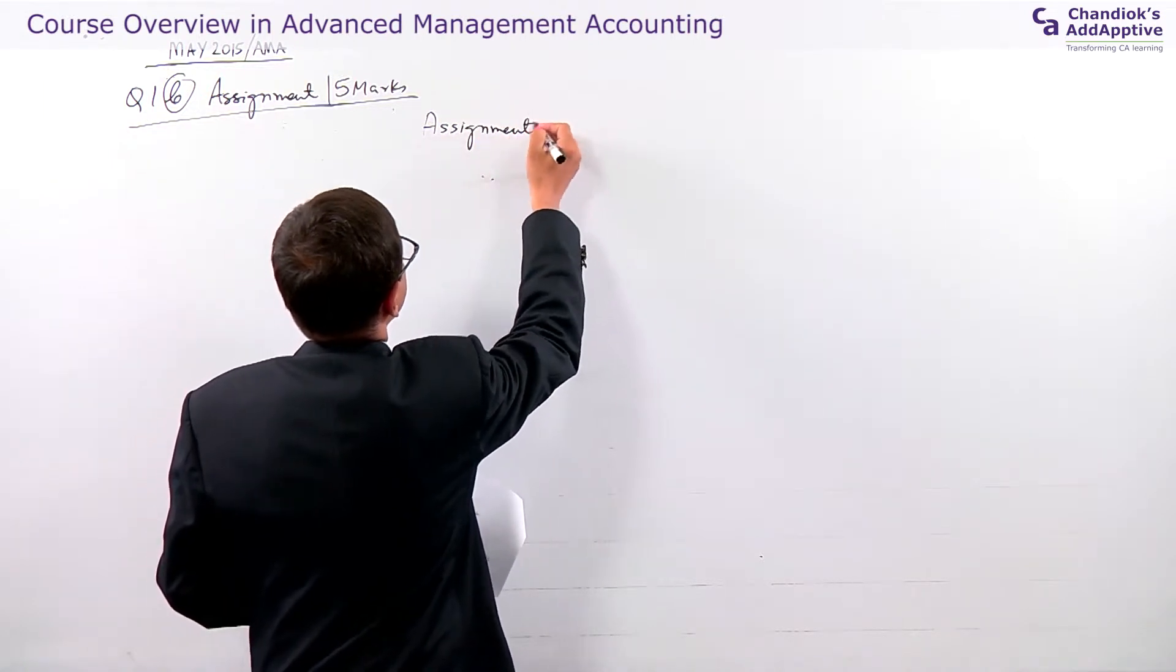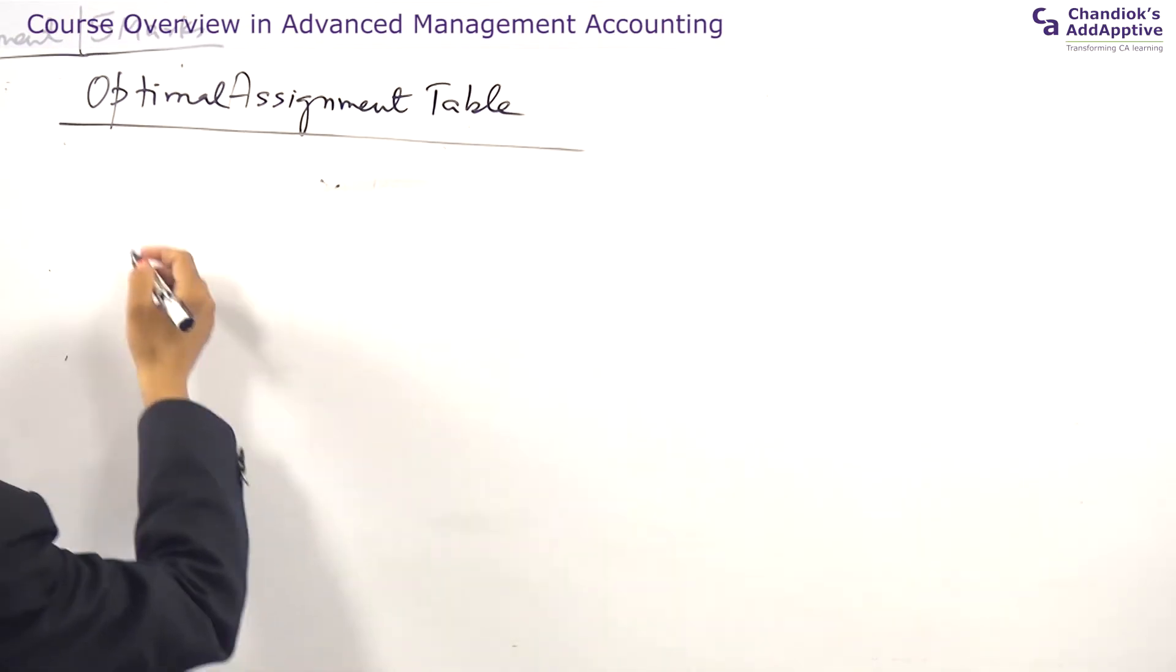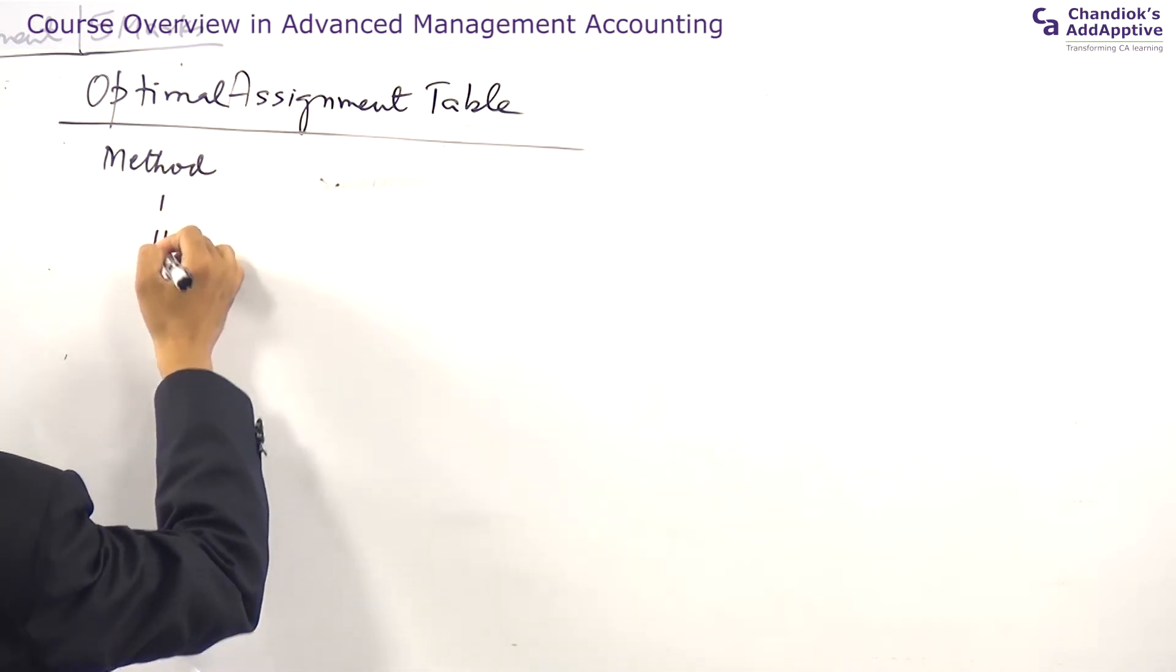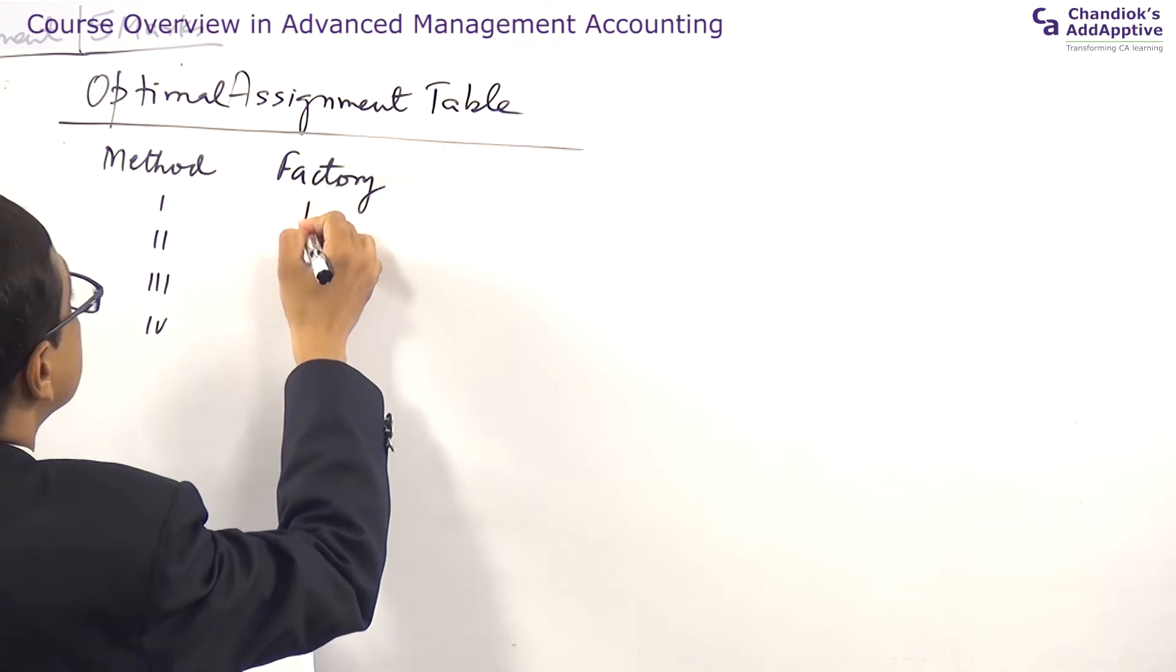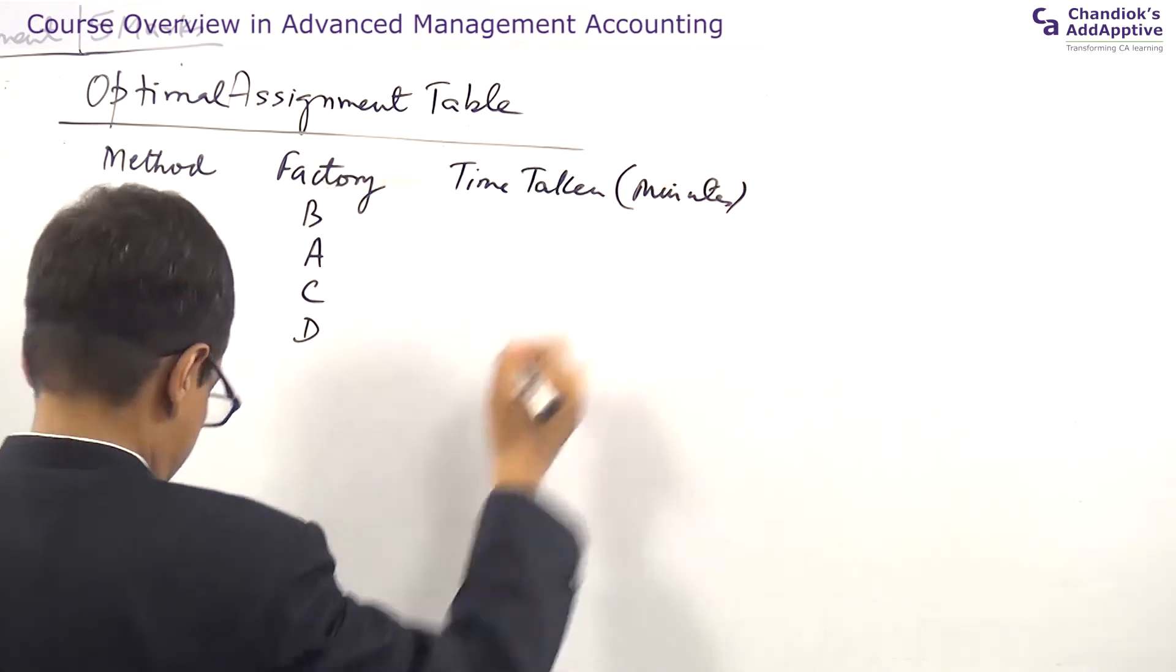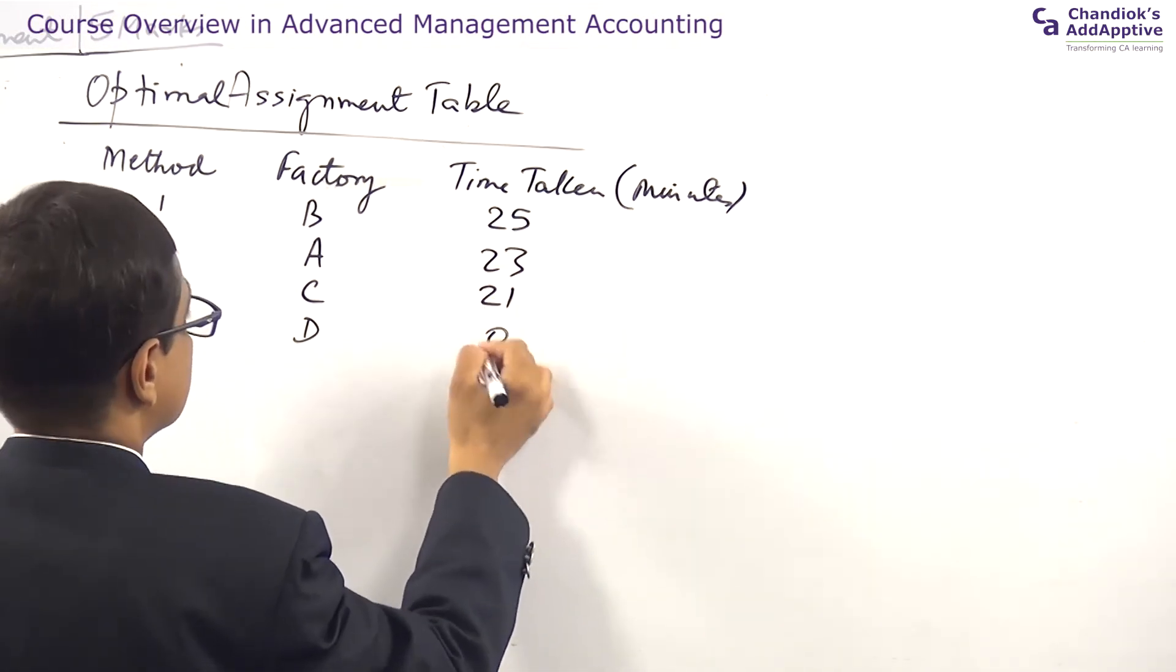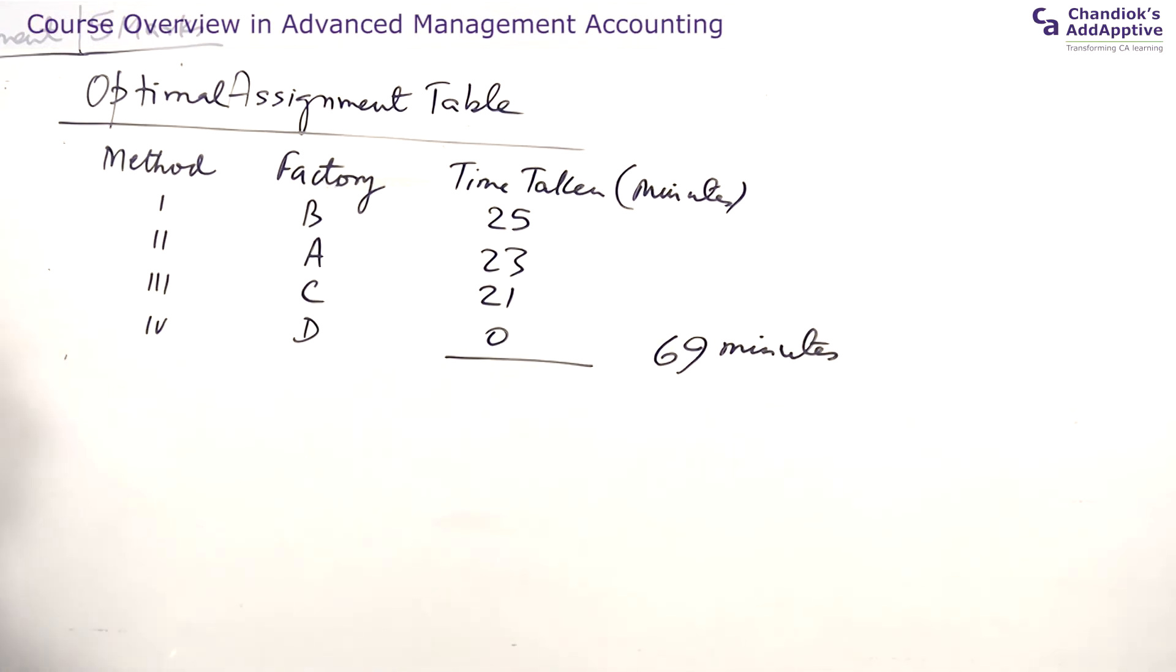So, assignment table. This is optimal assignment table. It is method 1, 2, 3, 4. Factory B, A, C, D. Time taken in minutes. If you add it, it is 69 minutes. What you notice? This is fourth method is not relevant.